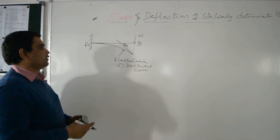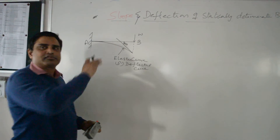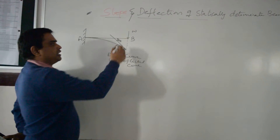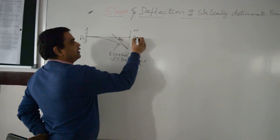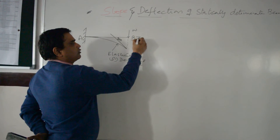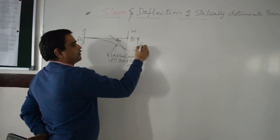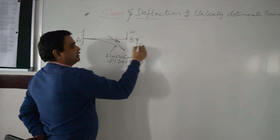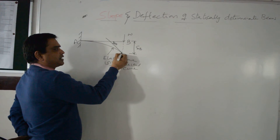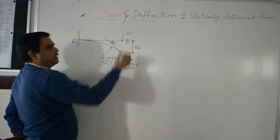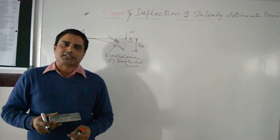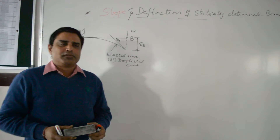Deflection is the vertical displacement between the axis of the beam and the elastic curve. This is the deflection — the vertical displacement between the elastic curve and the axis of the beam. This covers slope and deflection of a cantilever beam.